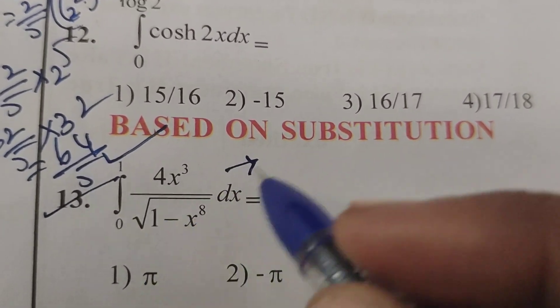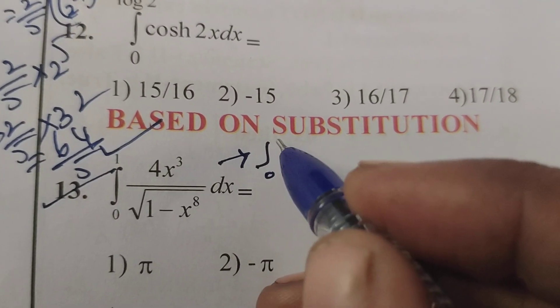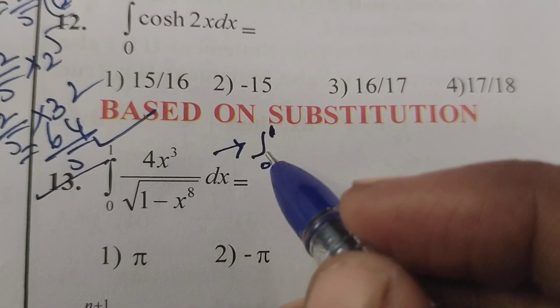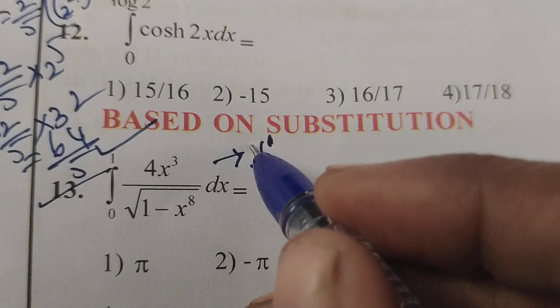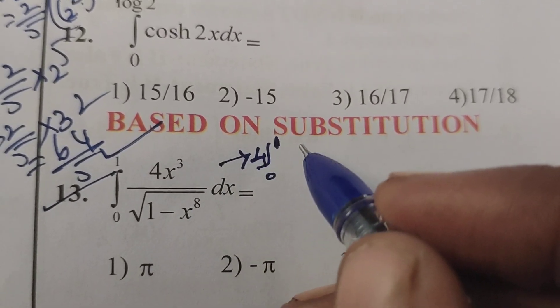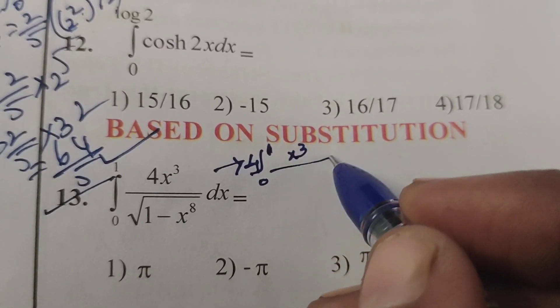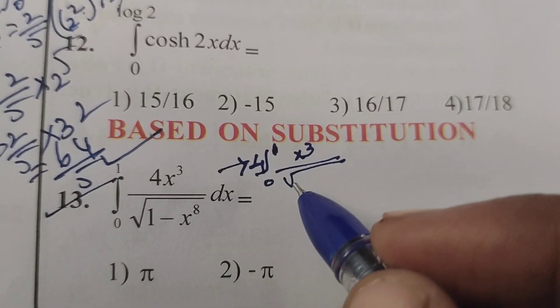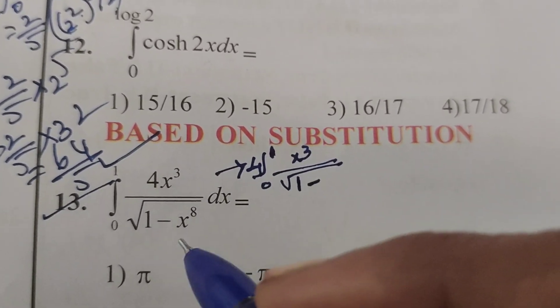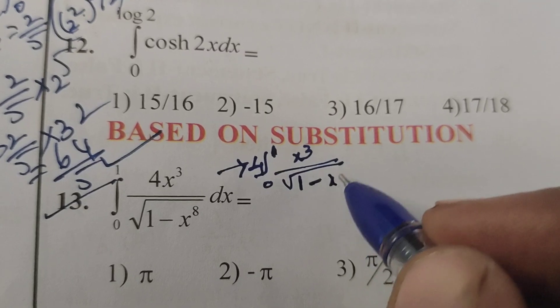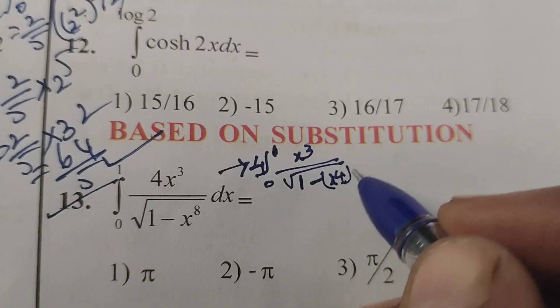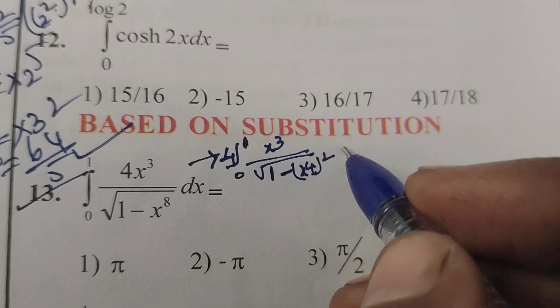First of all, given integral of the function, here I write integral 0 to 1, 4 is the constant, here I write x³ by root of 1 minus x⁸, means write x⁴ whole square dx.